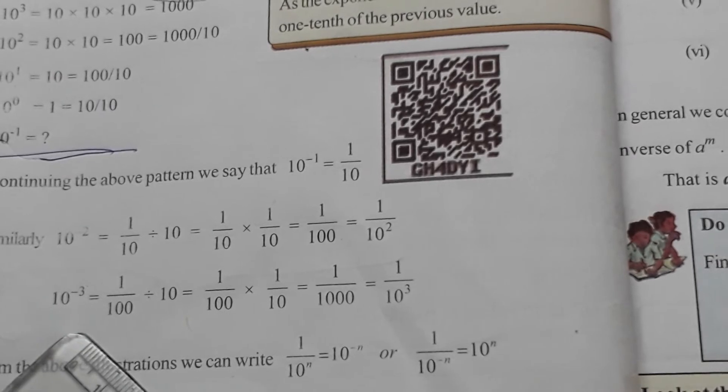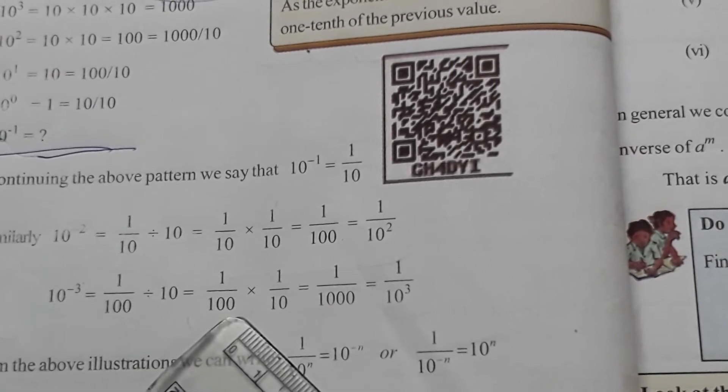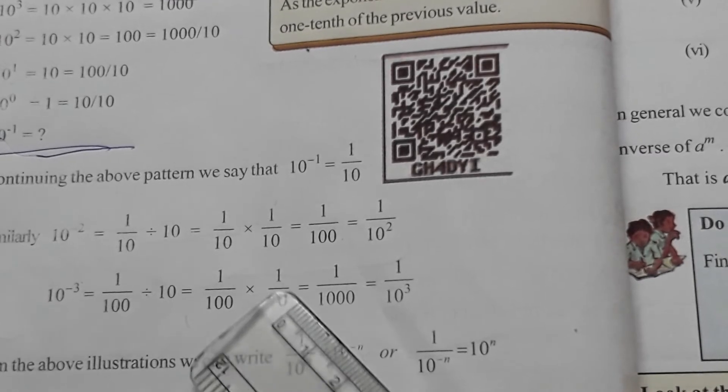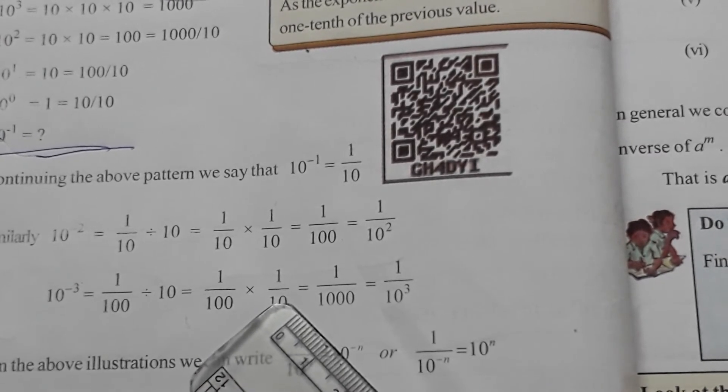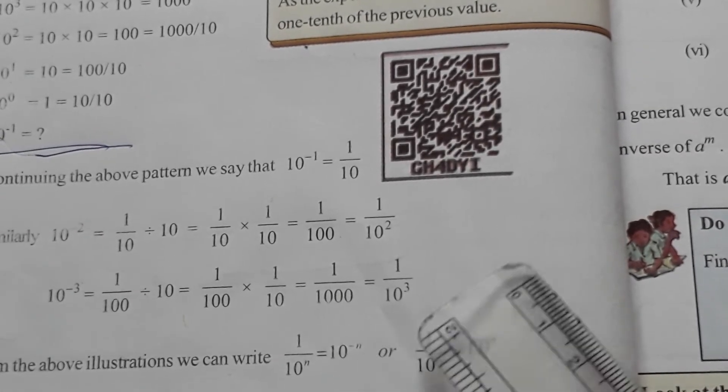10⁻³ is equal to 1/100/10, is equal to 1/100 × 1/10, is equal to 1/1000, is equal to 1/10³.